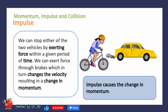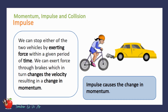Going back to this scenario, we can stop either of the two vehicles by exerting force within a given period of time. We can exert force through brakes, which in turn changes the velocity, resulting in a change in momentum. The force we exert within a given period of time to change the momentum is called impulse.